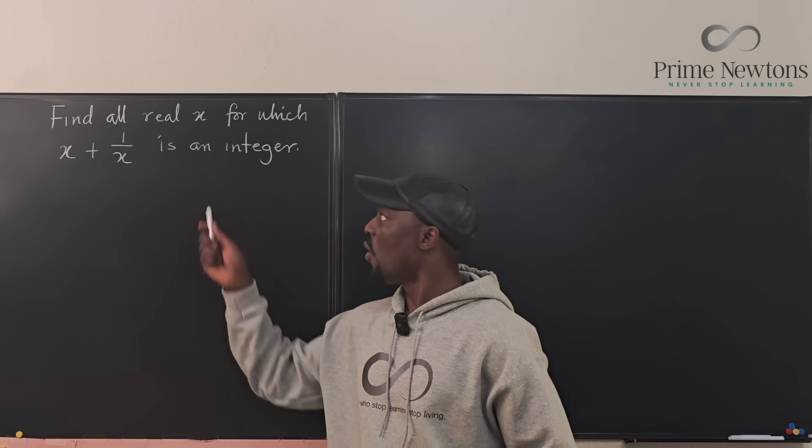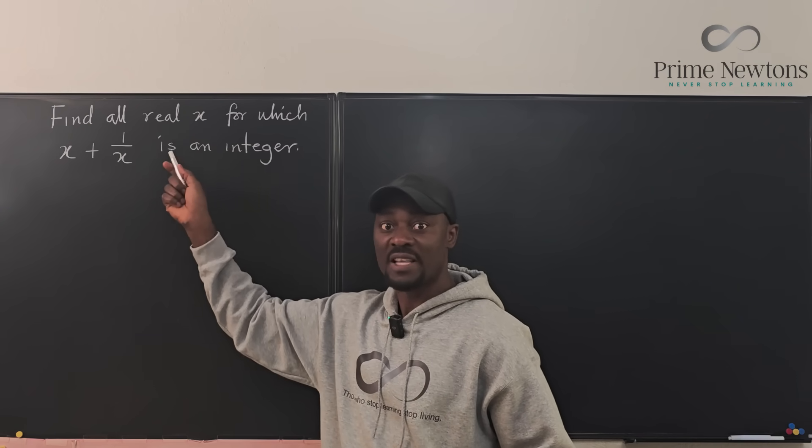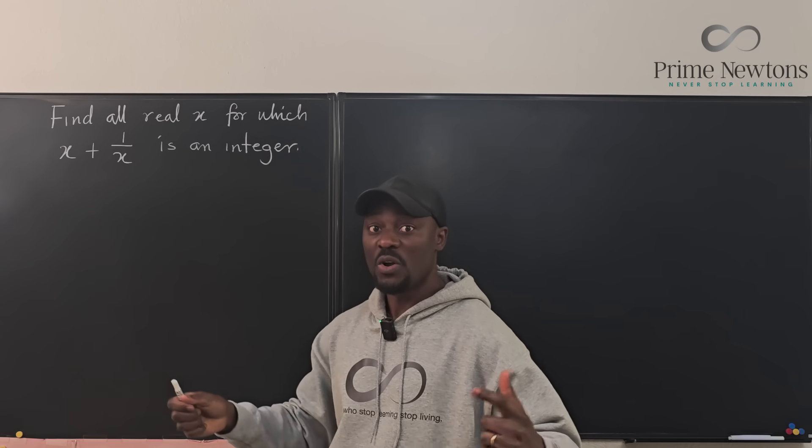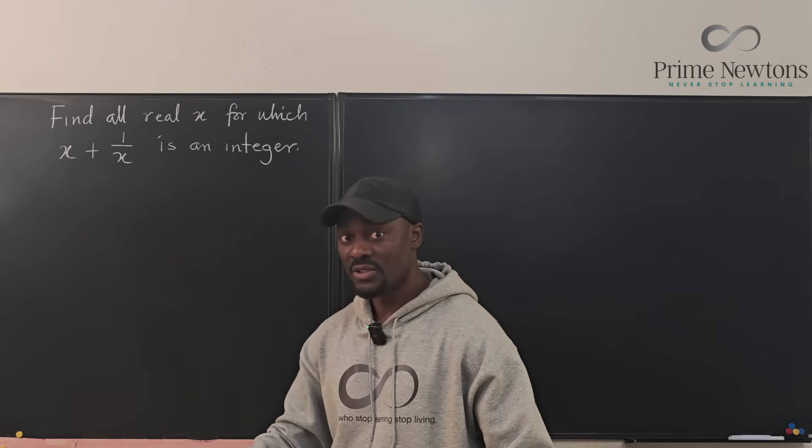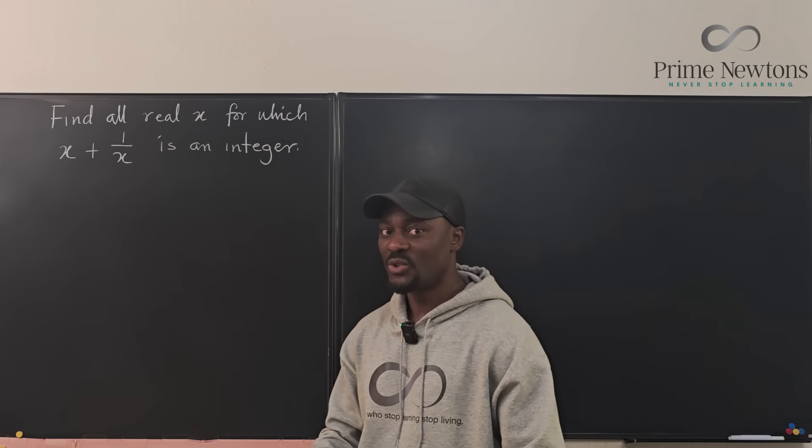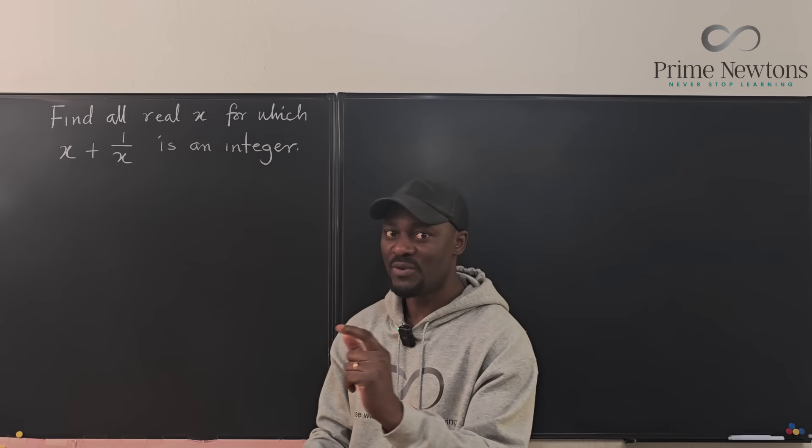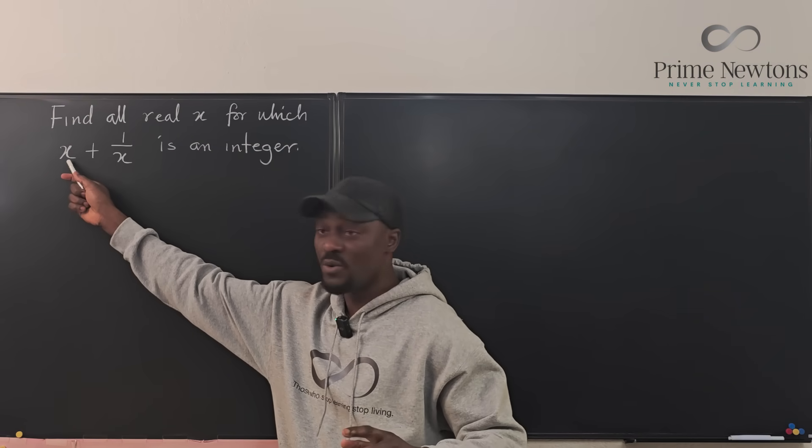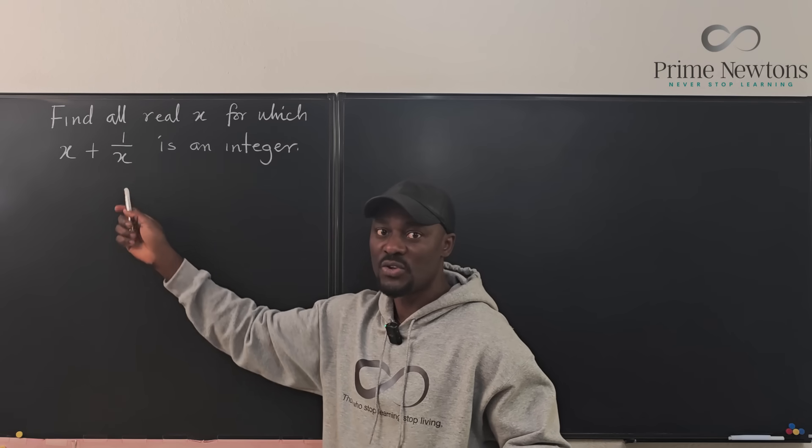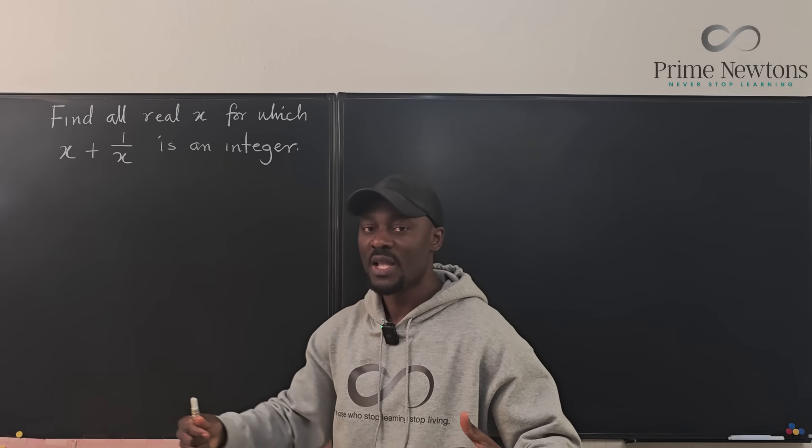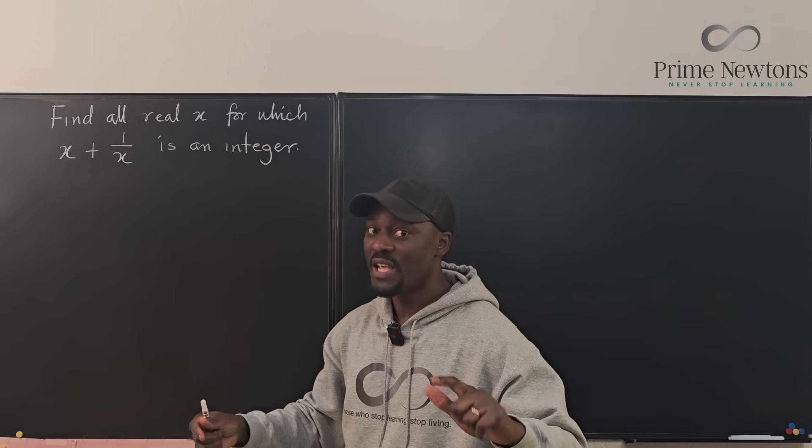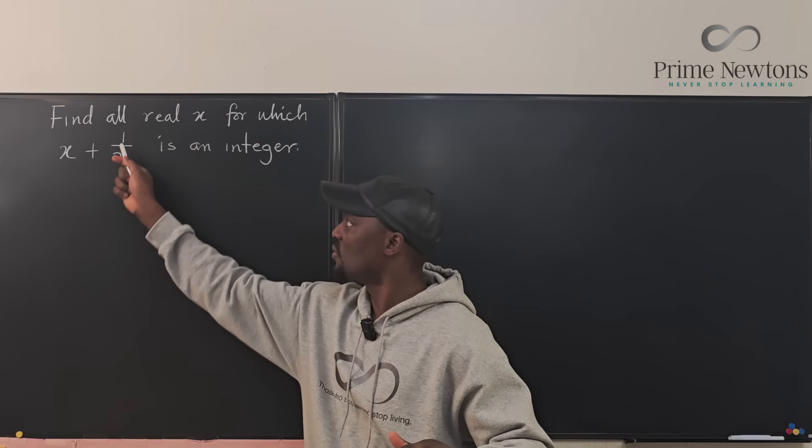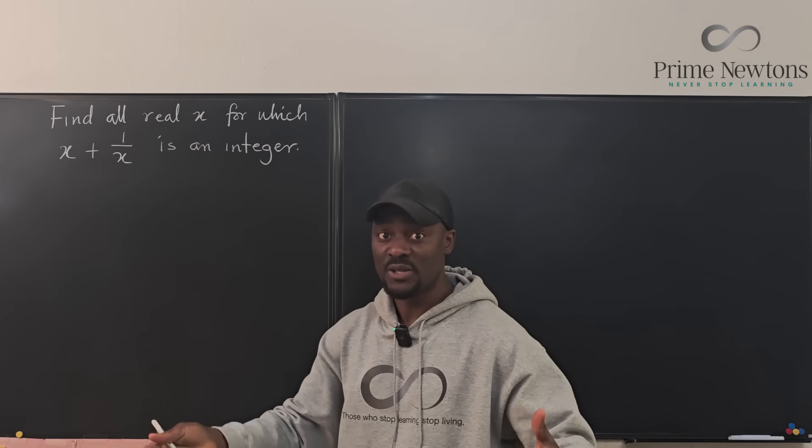Is it possible to find all possible values of x in which x plus 1 over x is an integer? Because naturally when you think about it, if you substitute the number 1 for x, you have 1 plus 1 over 1, which gives you 2. Or if you try negative 1, minus 1 plus 1 over minus 1 gives you minus 2.